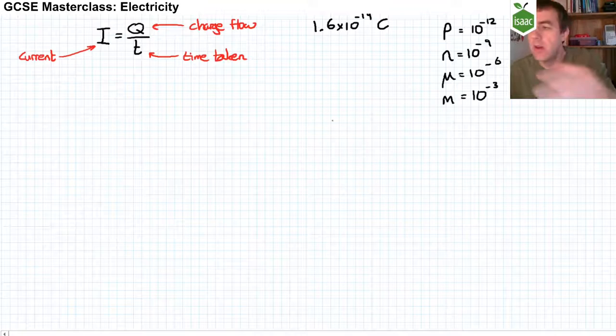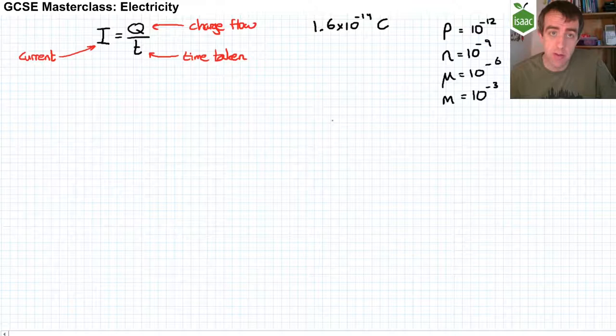The unit of current is the ampere. One ampere is equal to one coulomb of current that flows in one second.